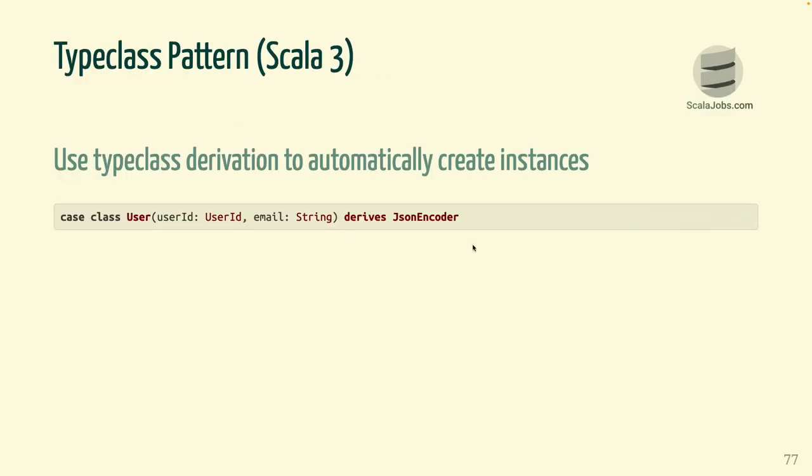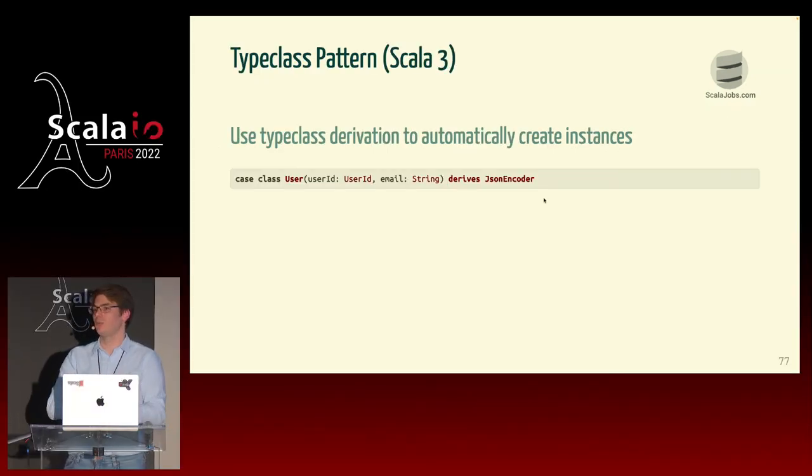One thing worth mentioning: in Scala 3, type class derivation is greatly improved. If you want to write a JSONEncoder for a User that has a UserID and a String, and you know how to encode each field individually, then you know how to encode the whole case class. In Scala 2, this is done via macros using libraries like Shapeless or Magnolia. But in Scala 3, it's built into the language — you can write: case class User derives JSONEncoder, and it does all the boilerplate for you. It really captures the type class pattern beautifully.